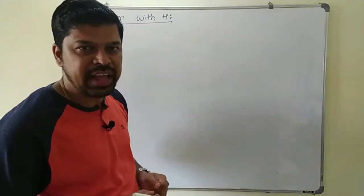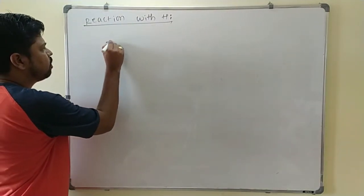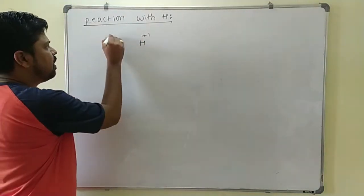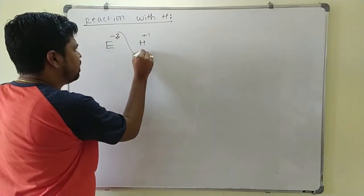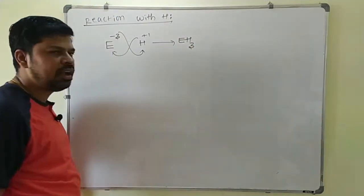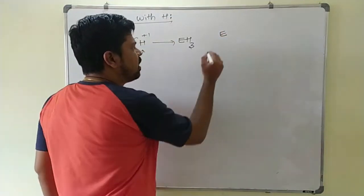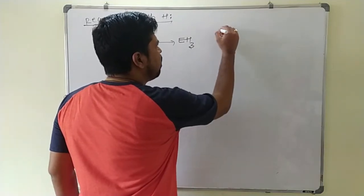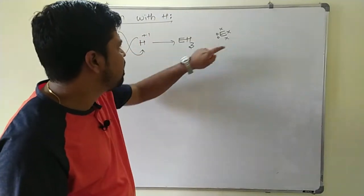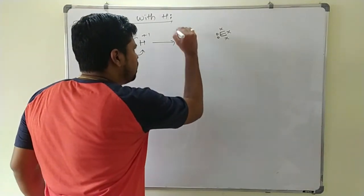We will discuss the reaction of Group 15 elements with hydrogen. Group 15 elements are electronegative and hydrogen is electropositive with an oxidation state of plus one. The Group 15 element has an oxidation state of minus three, so it will form EH3 type hydrides. Group 15 elements have 5 valence electrons — one lone pair and three unpaired electrons. Using those three unpaired electrons, it forms three bonds with hydrogen, with one lone pair always available on the central atom.